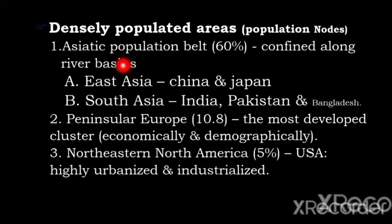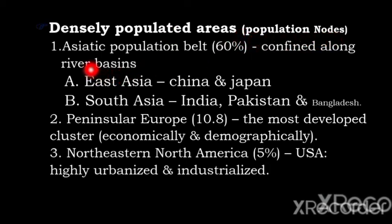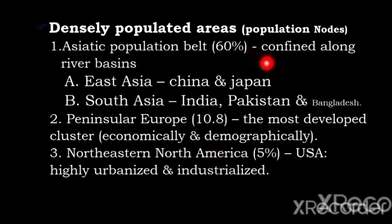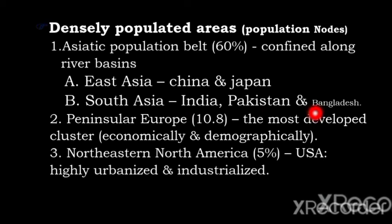World population distribution is classified into densely populated areas and sparsely populated areas. Densely populated areas are called population nodes of the globe. They include the Asiatic population belt, Peninsular Europe, and Northeastern North America. The Asiatic population belt contains 60% of all the world's population, confined along river basins. It includes East Asia — China and Japan — and South Asia — India, Pakistan, and Bangladesh.